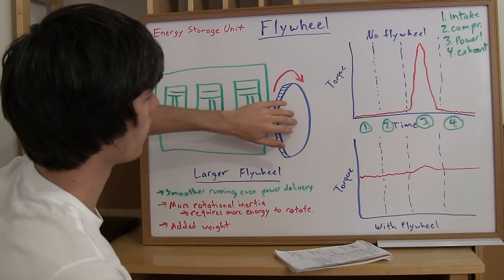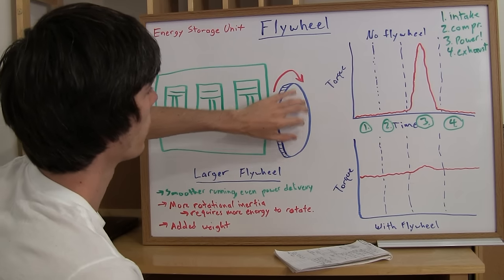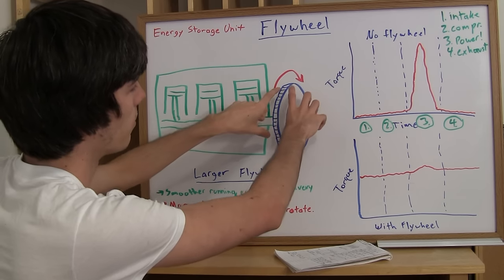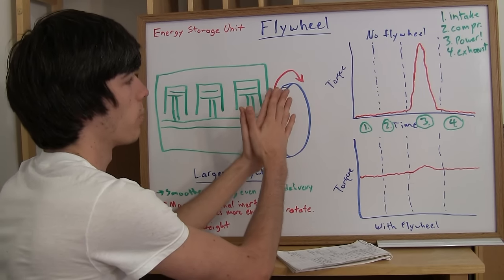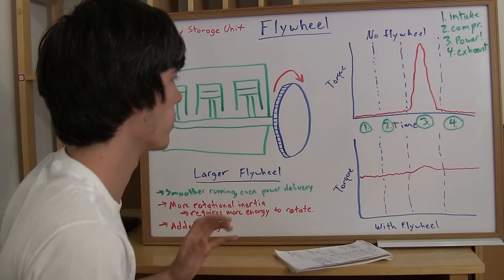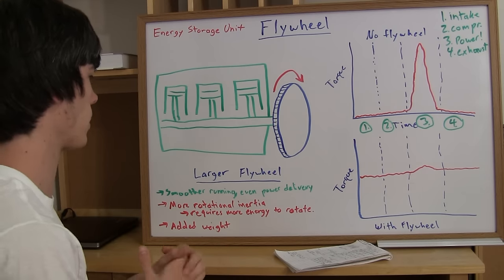So you'll either have a clutch or a torque converter, and the torque converter would be mounted attached to the flywheel, and the clutch plate would press against it when you're trying to accelerate or when you're engaging the clutch.